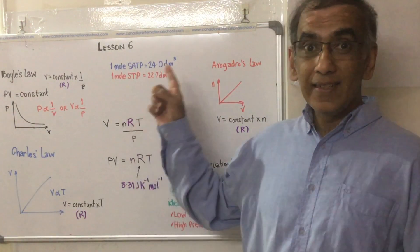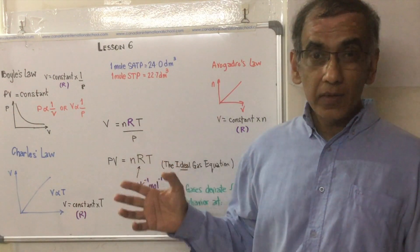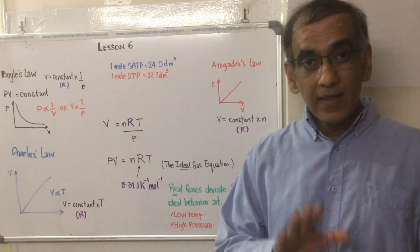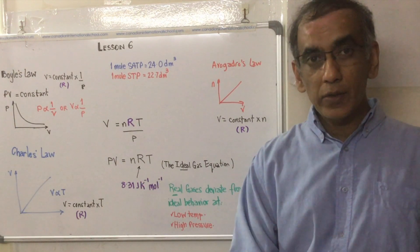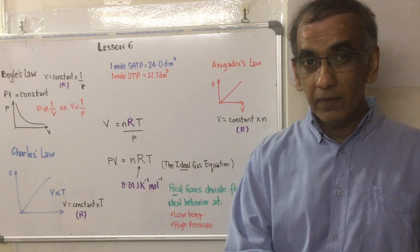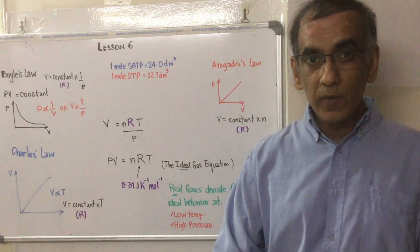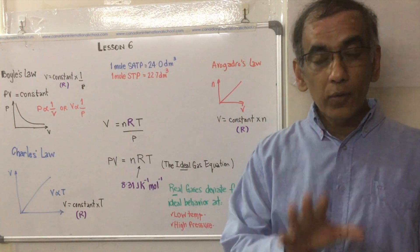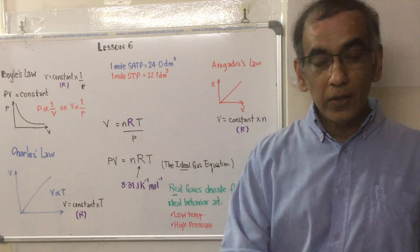Hello and welcome to lesson six. In lesson five we spoke about one mole of a gas at standard temperature and pressure: zero degrees Celsius or 273 Kelvin and one atmosphere or 100 kilopascals of pressure. Those are standard conditions.